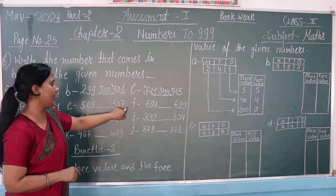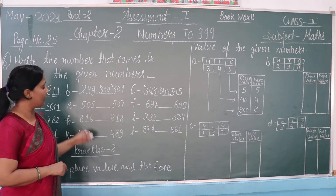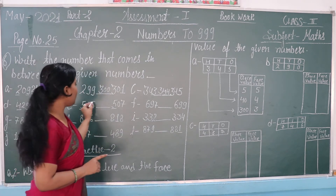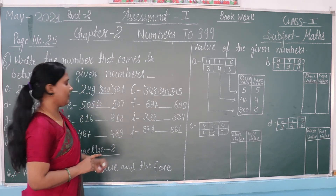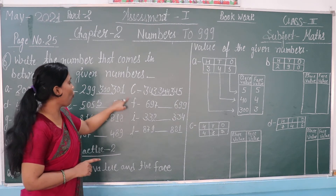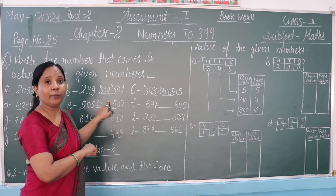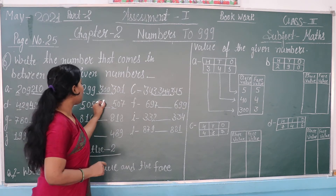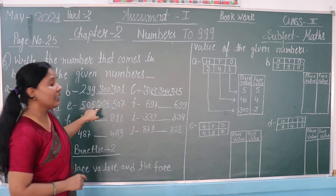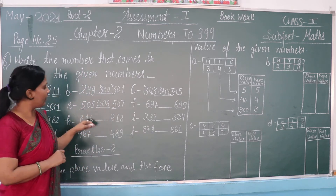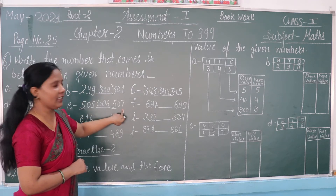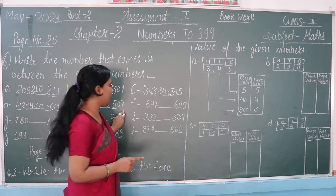Next: 505 and 507. This is around 500. We first write 5, then between 5 and 7, the number that comes is 6, so the answer is 506. Check: 505, 506, 507 — yes, it is correct.